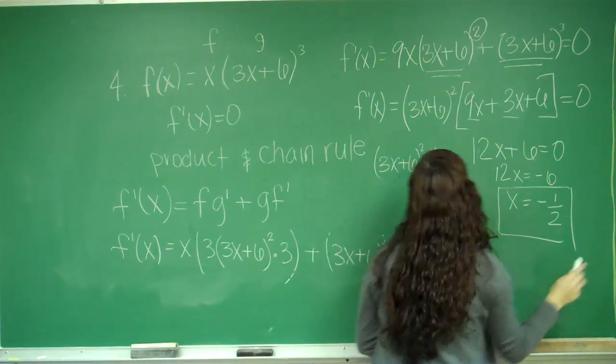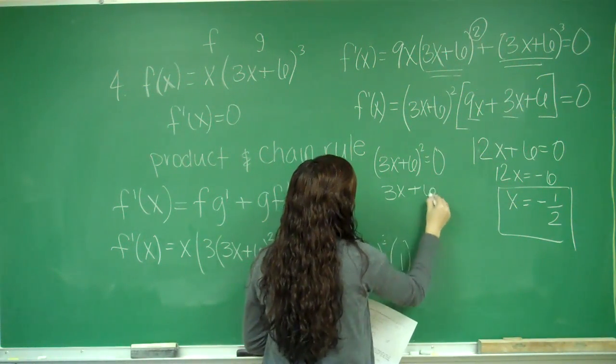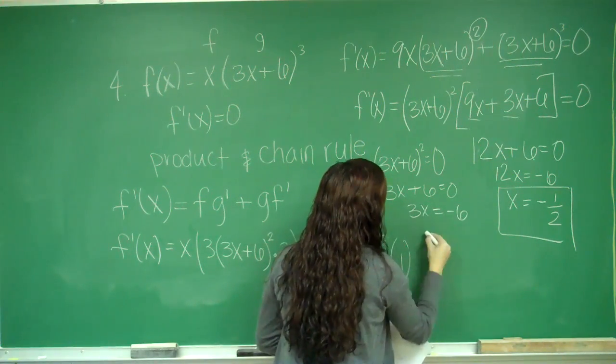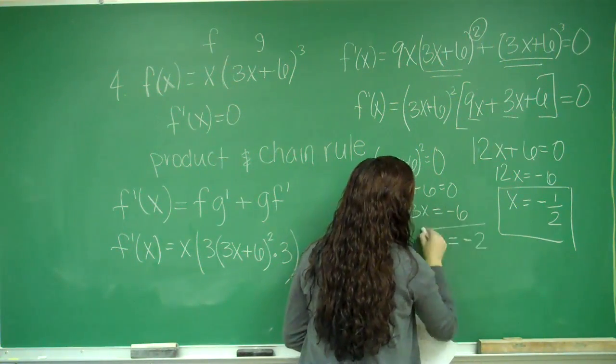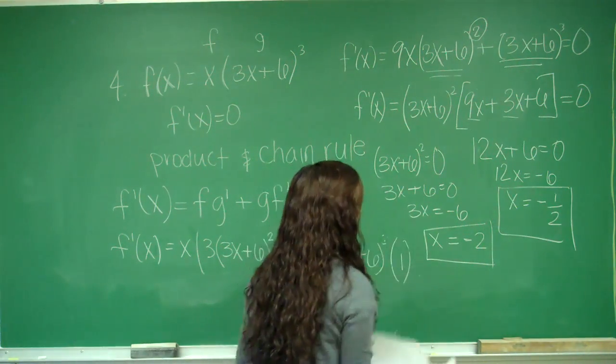So there's one answer. And then when I solve this one, I have 3x plus 6 equals 0. 3x equals negative 6, x equals negative 2. So those will be your answer. And that is choice B.